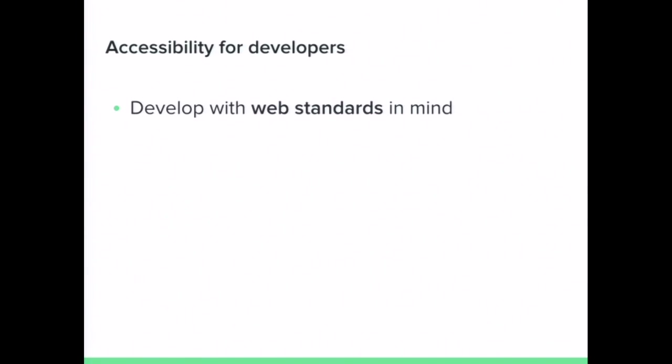When tackling accessibility with development, develop with web standards in mind as much as possible. If you can keep things semantic and coded in a standards-compliant way, you'll reap all the accessibility benefits the web promises. Treat buttons as buttons — don't just use a div with JavaScript and call it a button class, because that won't be clickable and won't be announced to people with assistive technologies. Set the page language and give each page a descriptive, unique title.